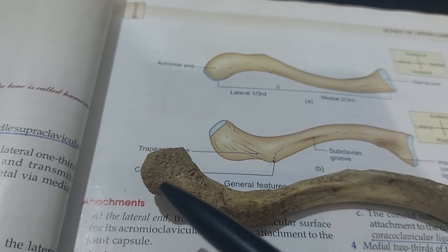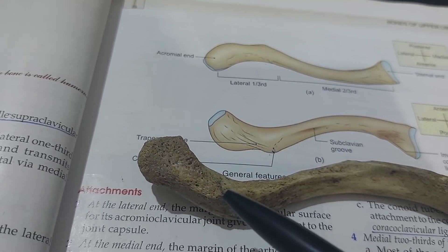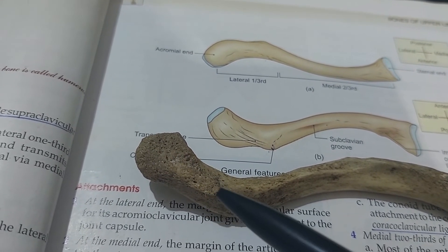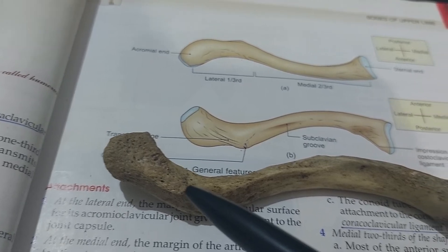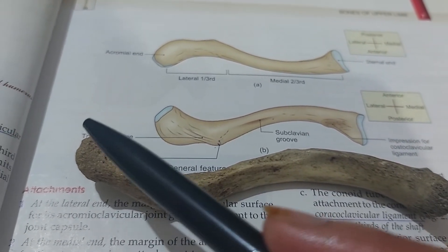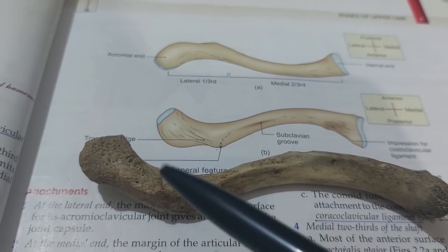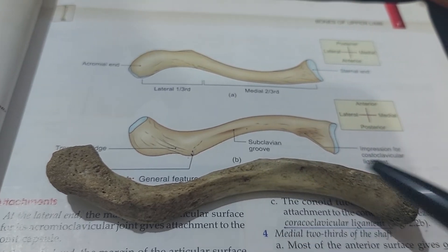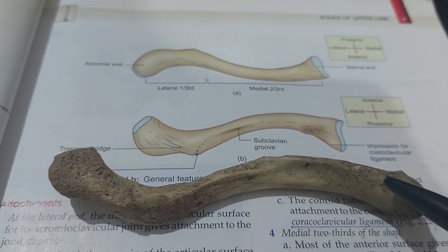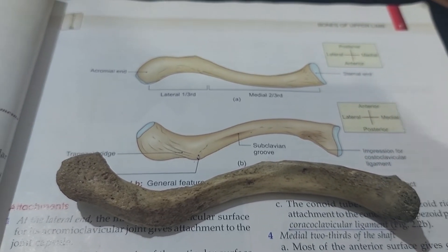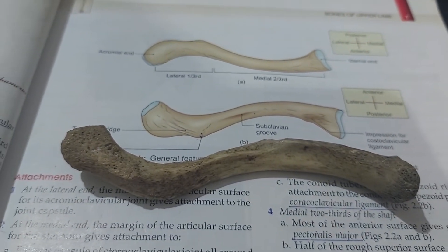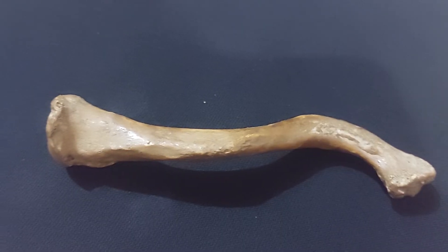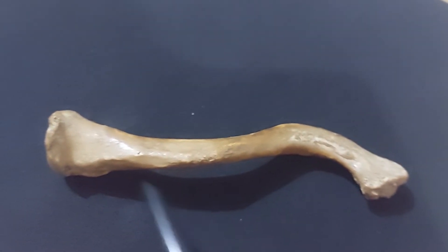Also visible on the inferior surface: the trapezoid ridge and the conoid tubercle. To summarize the inferior surface features of the right clavicle: trapezoid ridge, conoid tubercle, subclavian groove, and impression for the costoclavicular ligament.